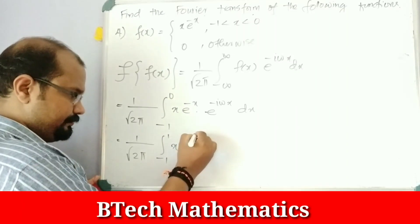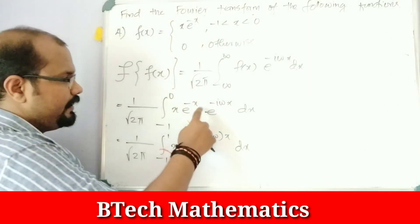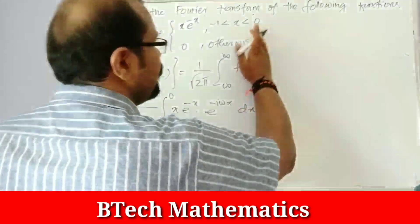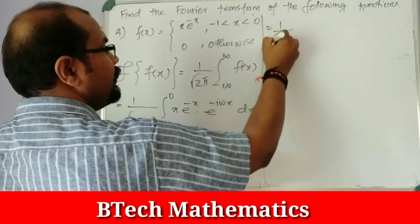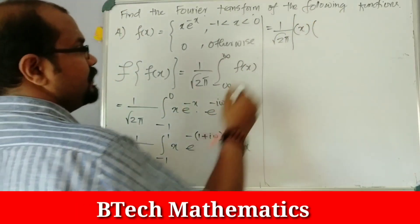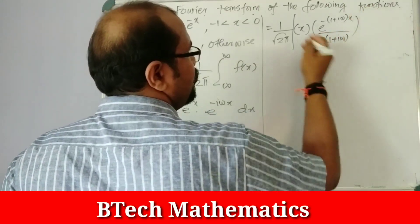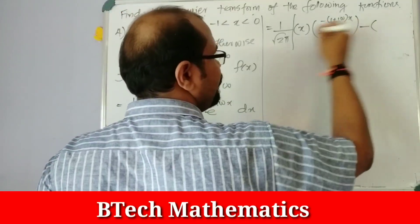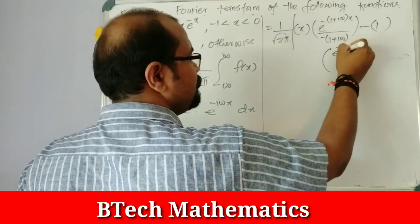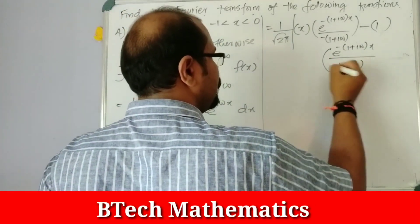Combining exponents: x times e raised to minus (1 + i·ω)·x. Using integration by parts — first function x, second function e raised to minus (1 + i·ω)·x — gives x times e raised to minus (1 + i·ω)·x divided by minus (1 + i·ω), minus the integral of e raised to minus (1 + i·ω)·x divided by (1 + i·ω) squared, evaluated from minus 1 to 0.